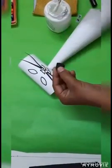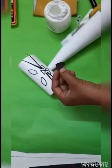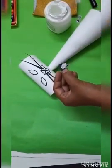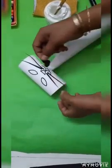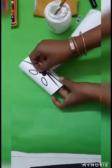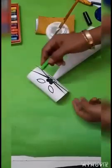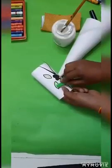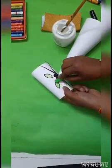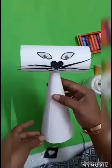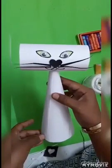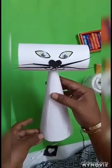After this, I will put some Fevicol on this heart-shaped nose and I will paste it here. After this, I will use this crayon. You can see it here—beautiful eyes of the cat are done.